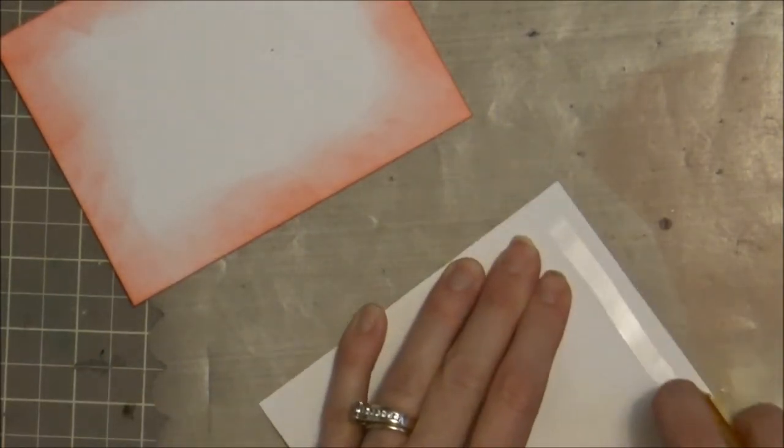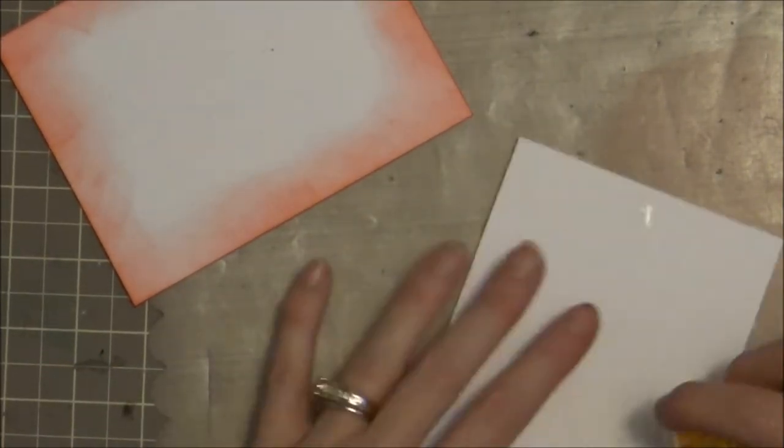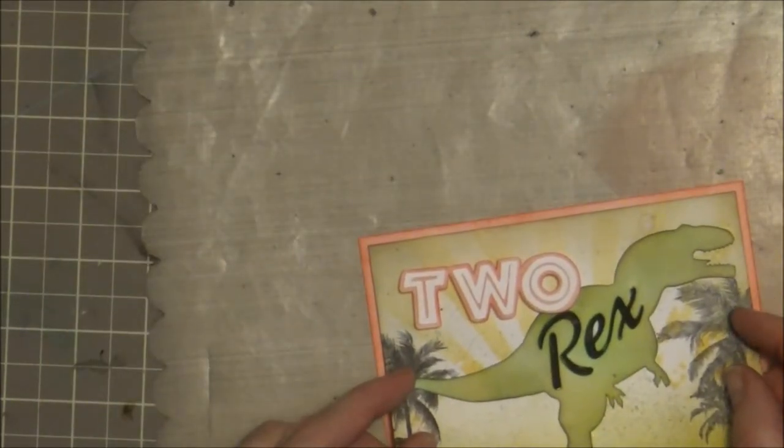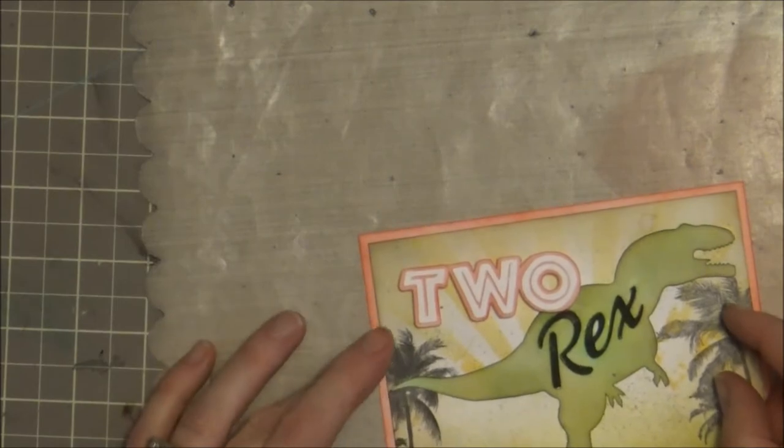And then I'm going to just add some simple foam pop dots to the back of my two there and cut one in half just since they're too large to fit there. And I'm going to add this to my card right where I want it.